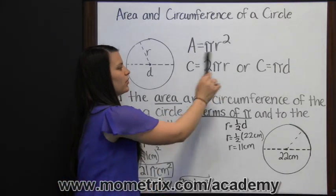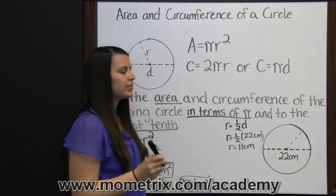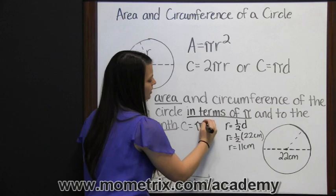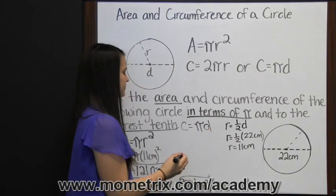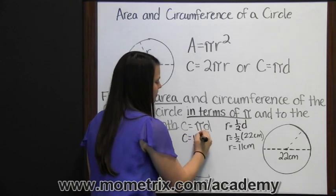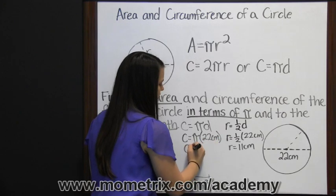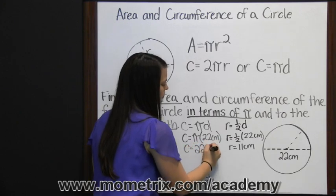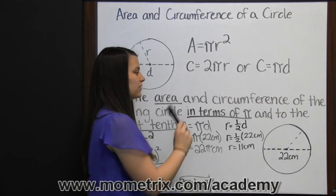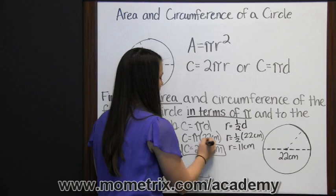Circumference, we can use either one of these formulas to find. Since we were given the diameter, we can just use our circumference equals pi times diameter formula. So now we need to substitute our diameter. The circumference is pi times 22 centimeters, which is 22 pi centimeters. And that gives us the first answer they asked for, in terms of pi, 22 pi centimeters.